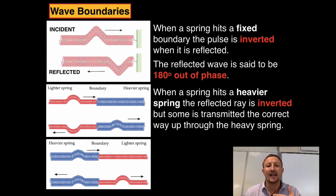We've got a light spring hitting a heavier spring, the incident wave hits at the boundary surface. Some of the wave is inverted and passes back through the lighter spring. Some of the wave remains in its normal state and passes through the heavy spring.